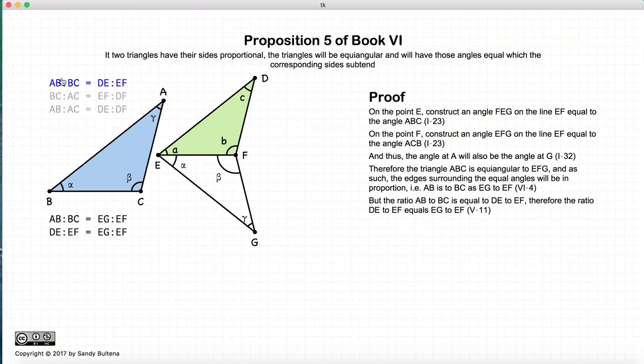But AB to BC equals DE to EF. So if we take AB to BC and replace it with DE to EF in this equation, we end up that DE to EF is equal to EG to EF. But now we have DE and EG. The ratio to EF in both cases are the same, which according to Proposition 9 of Book 5 means that DE is equal to EG.